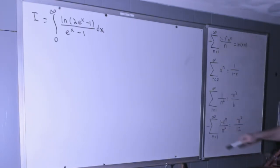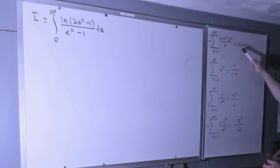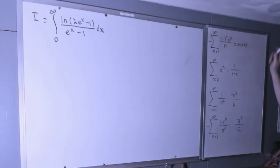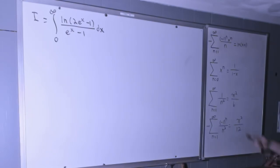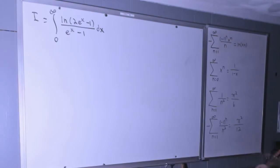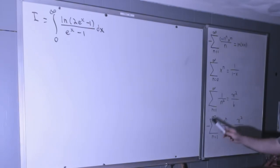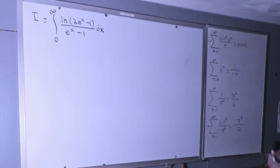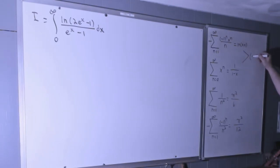We're going to be using this bunch of identities right here: the Taylor series representation of the natural log function, ln(x+1), which equals the sum from n=1 to infinity of (-1)^(n+1) x^n / n. We also have the sum of reciprocals of squares equal to π²/6, and the alternating sum of reciprocals of squares equal to π²/12. These two are valid on the interval (-1, 1].